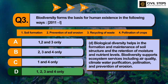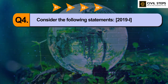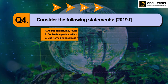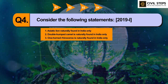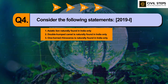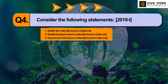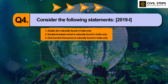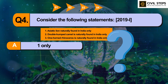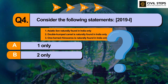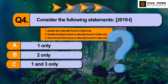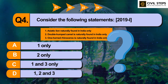Now let us discuss question number 4. Consider the following statements: 1. Asiatic lion is naturally found in India only. 2. Double-humped camel is naturally found in India only. 3. One-horned rhinoceros is naturally found in India only. Which of the statements given above is or are correct? Option A: One only. Option B: Two only. Option C: One and three only. Option D: One, two, and three.